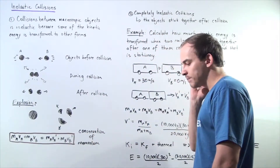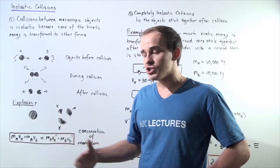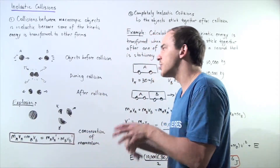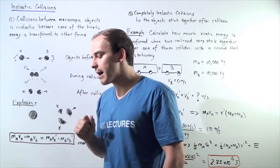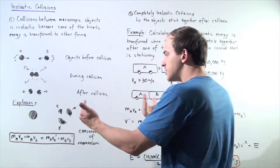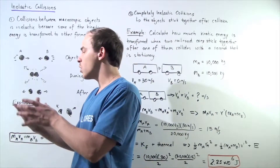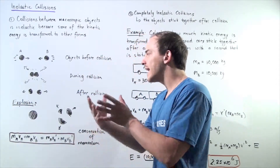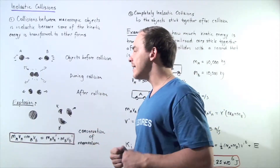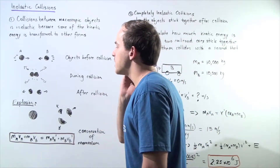A second form of transformation takes place, and that is known as thermal energy. Kinetic energy is transformed into thermal energy, increasing the internal energy of our two macroscopic objects. That basically means that after our collision takes place, because some of that initial kinetic energy was transformed into other forms, we're going to have less kinetic energy at the end — the total sum of kinetic energy at the end will be less than the total sum of the initial kinetic energy.